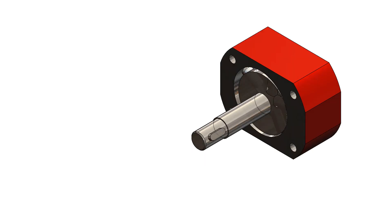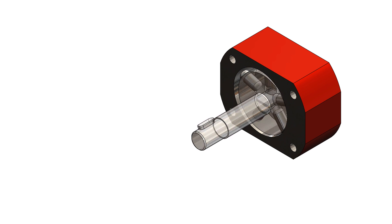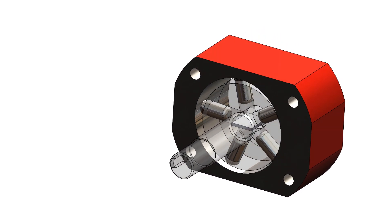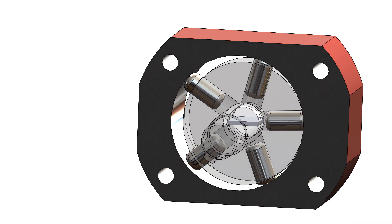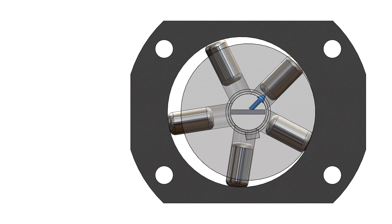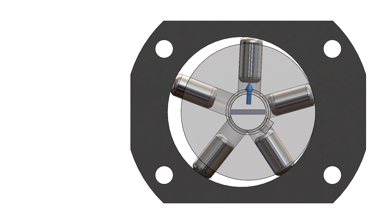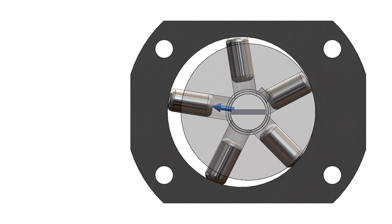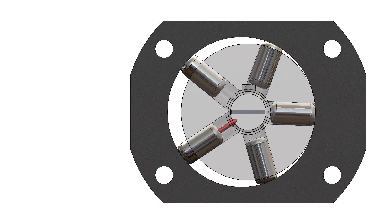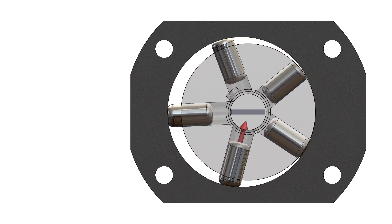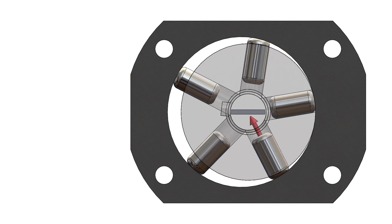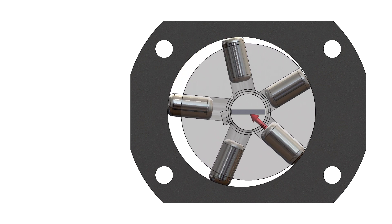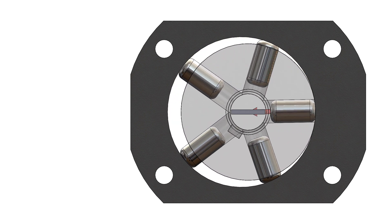The cylinders are positioned radially around the axis of rotation. The piston starts in the inner dead center with the suction process. As the shaft rotates, the displacement chamber becomes larger and fluid flows into the displacement chamber. After a rotation angle of 180 degrees, the piston is in the outer dead center, and from this point the piston displaces the fluid in the pressure channel of the pump.